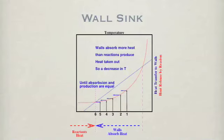If the walls absorb more heat, then the overall temperature of the process decreases progressively from step 1 to step 6. The temperature settles to where the heat loss equals the heat production by the reactions.